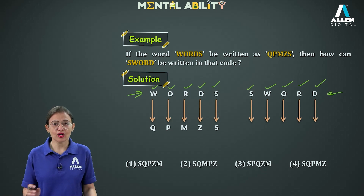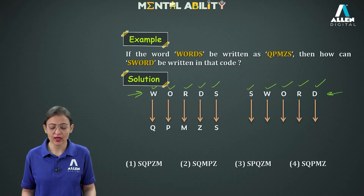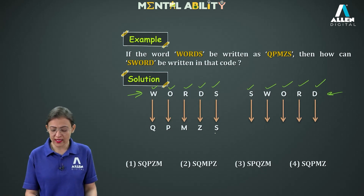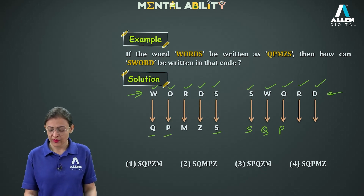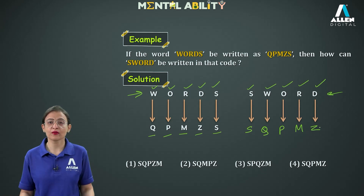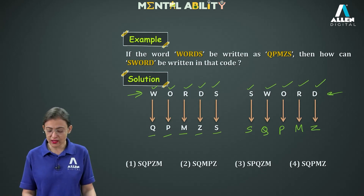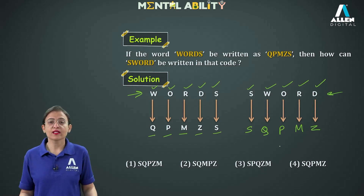We will find the code for each letter of SWOT. Code for S is S, code for W is Q, code for O is P, code for R is M, code for D is Z. So the required code is SQPMZ, and the fourth option is correct.